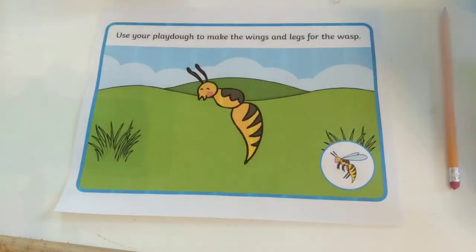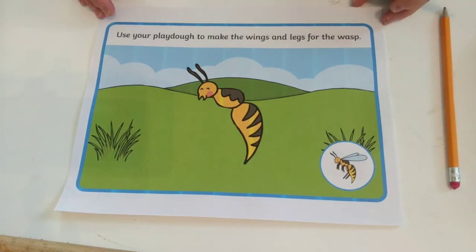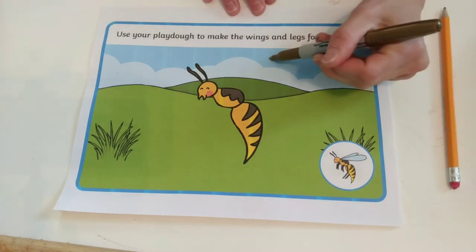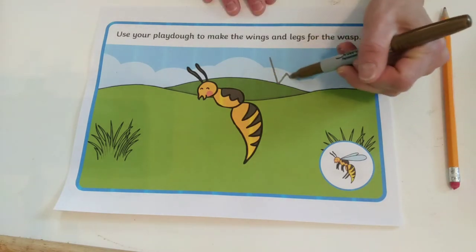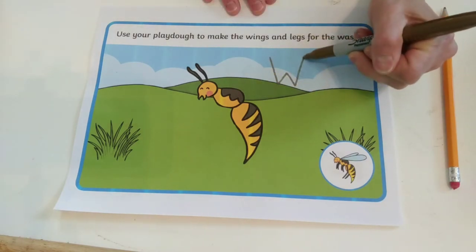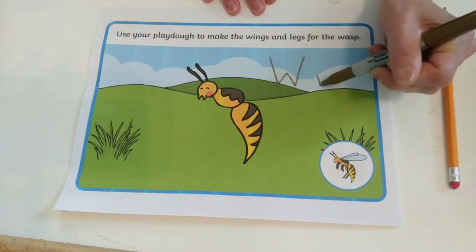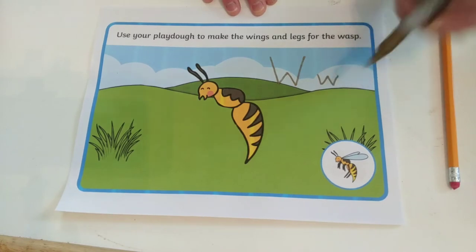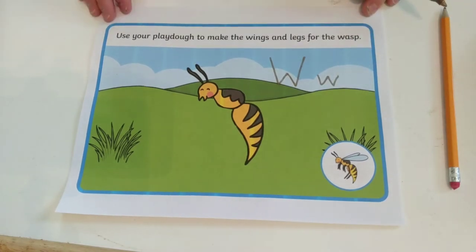My next bug is a wasp. It's a type of bee. Wasp begins with the letter W — capital W, lowercase w. Wasp.